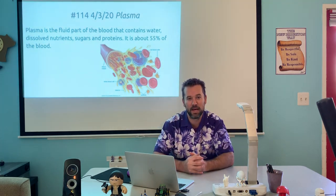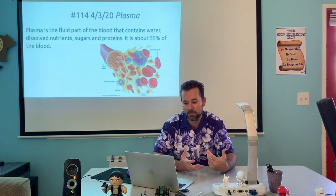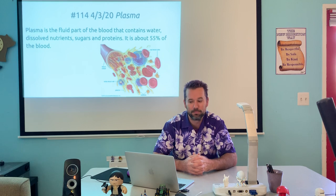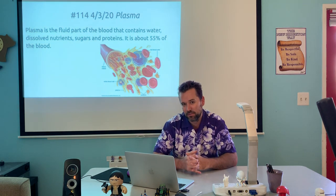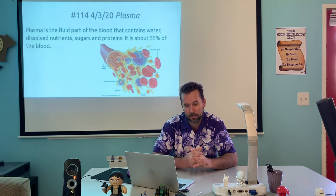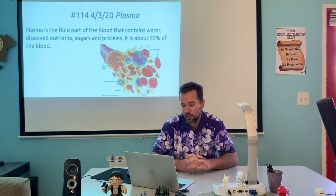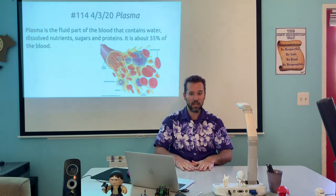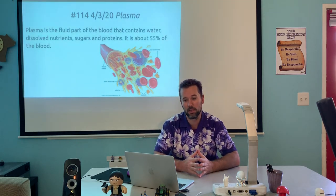Today's vocabulary word, as you can see behind me, is 'plasma' — not a plasma TV, not the fourth state of matter. This is blood plasma: it's the fluid part of the blood that contains water, dissolved nutrients, sugars, and proteins. It makes up about 55% of the blood. As you can see in the illustration — red blood cells, blood vessel, white blood cell, plasma, and platelets are all labeled there.